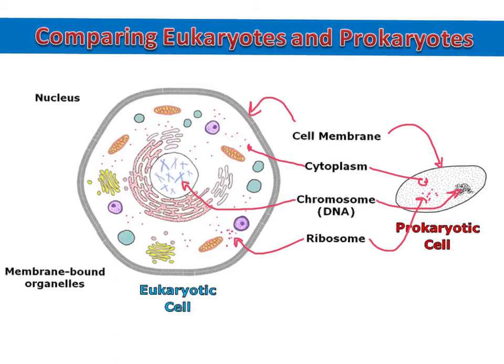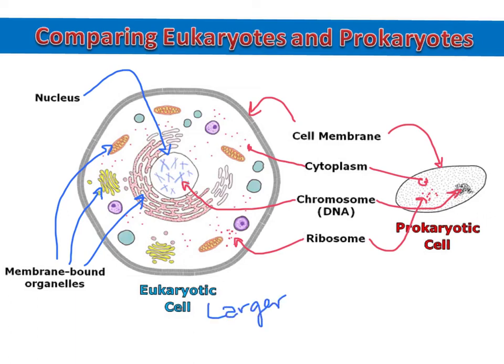The main difference between eukaryotes and prokaryotes is that eukaryotic cells keep their chromosomes inside of a nucleus. Eukaryotic cells also have membrane-bound organelles, like the mitochondria, Golgi bodies, and endoplasmic reticulum. Prokaryotic cells do not have any of these complicated membrane-bound organelles. You'll also notice that eukaryotic cells are much larger than prokaryotic cells, and they're also much more complex, because they're full of so many membrane-bound organelles and they're so much larger.